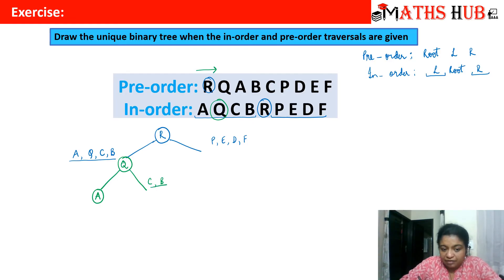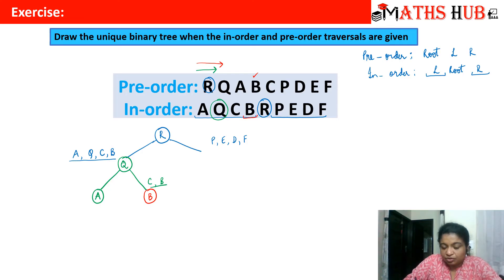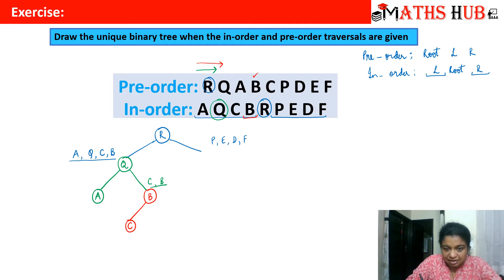Next step: we are left with two elements — C and B. We go back to pre-order and scan left to right to see which appears first. B appears first, so B is the next root. We go back to in-order: vertex C is appearing on the left side of B, and there is nothing on the right side. So there will be vertex C on the left of B and no branch on the right.